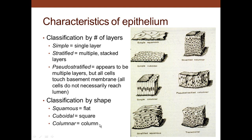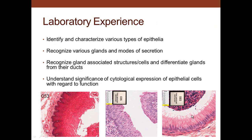So there are different types: stratified squamous, simple squamous, stratified columnar with more than one layer of columnar cells, and then transitional. In the laboratory exercise today, we'll identify and characterize various types of epithelium, recognize the various glands and modes of secretion, and recognize the grains associated with structures in different glands. We want to understand the significant physiological expression of epithelial cells with regard to their function.